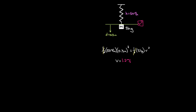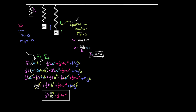To recap: even though vertical springs seem harder because of gravitational forces and potential energy, if you measure spring displacement from the new equilibrium position rather than from the natural spring length, you can simply use conservation of energy without any mention of gravitational potential energy at all.